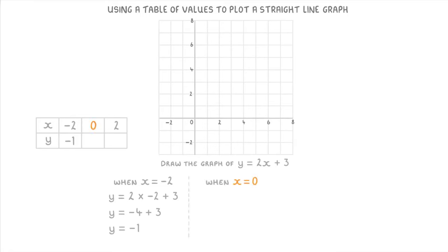Then we do the same thing for when x is 0, so 2 times 0 plus 3, which is 0 plus 3, so just 3. And the same again for when x is 2. So 2 times 2 plus 3, which is 4 plus 3, giving us y equals 7.